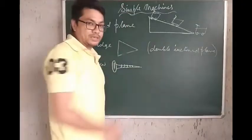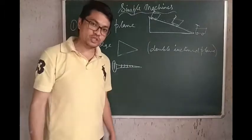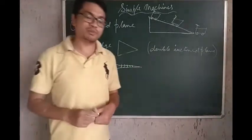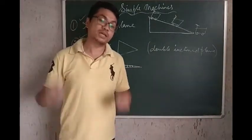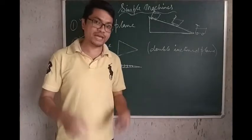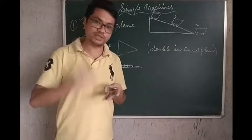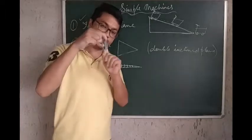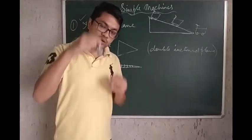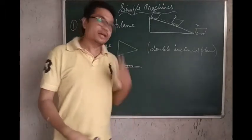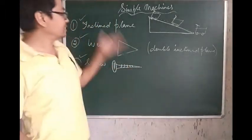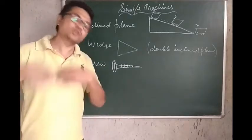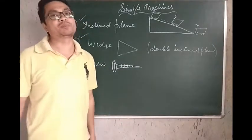So class 6, in this topic of simple machines, we discussed about different kinds of simple machines: levers, which were of different kinds — first class lever, second class lever, third class lever. We also discussed about pulleys, wheel and axle, and of course inclined plane, wedge, and screw. There are so many other kinds of simple machines as well.